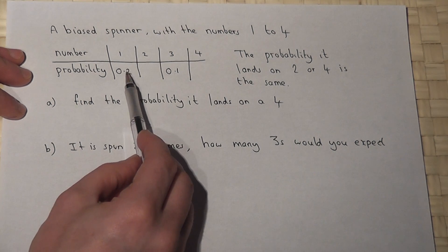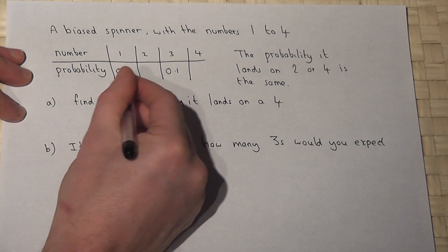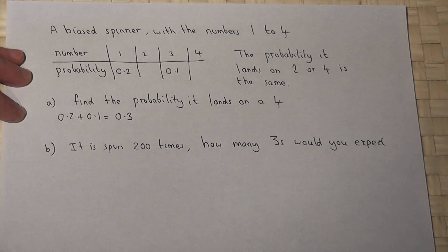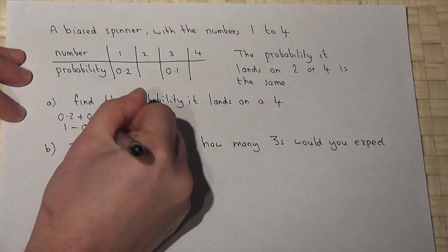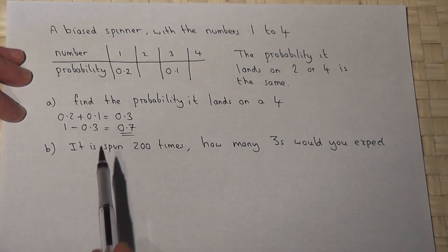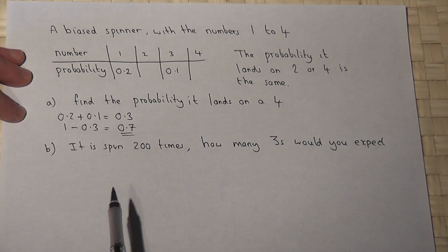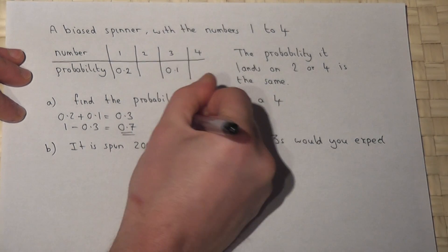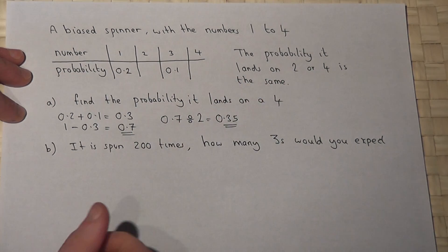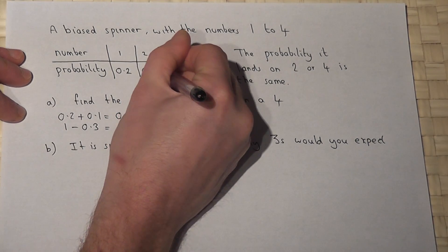We know the sum of all probabilities must equal 1. So 0.2 and 0.1 must equal 0.3. If I do 1 take away 0.3 I get 0.7. So these two gaps must total 0.7. Because they're the same, to work out either of them I will just do 0.7 divided by 2, which is 0.35. So the chance it lands on a 4 or indeed a 2 are both 0.35.